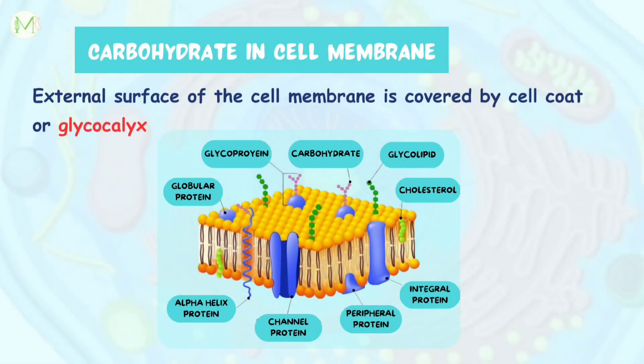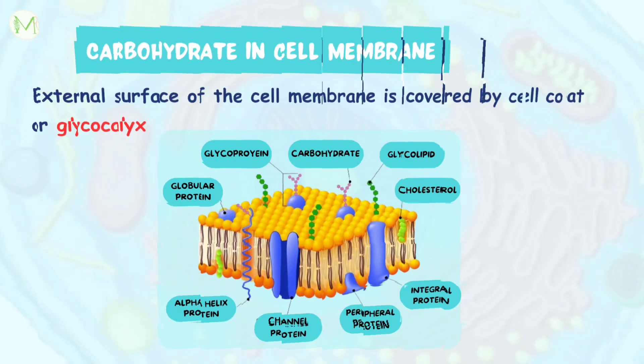A layer of loosely arranged carbohydrates can be found on the external surface of the cell membrane. We call it the glycocalyx, or cell coat. These carbohydrates are usually oligosaccharides.